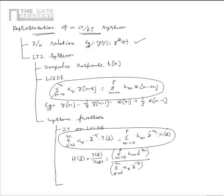Alternatively, the system function can also be obtained from the impulse response as the Z-transform of h(n), which equals the system function H(z) along with its ROC. We have already seen that given an ROC, the system can be characterized for causality and stability.